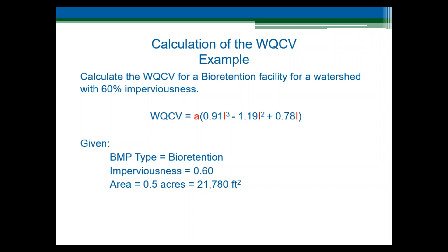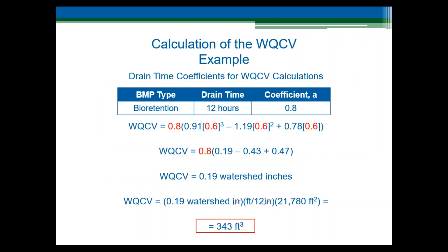Now that we've gone through the method, let's do an example. For this example, let's assume that we are designing a bioretention facility for a watershed that has an imperviousness of 60%. We also will assume a watershed with an area of a half an acre, or 21,780 square feet. The first thing we do is to select an A coefficient based on the type of stormwater control measure and the drain time. For a bioretention facility, the drain time is 12 hours, and the A coefficient is 0.8. Now we can plug in our imperviousness of 0.6 into the equation with the A coefficient. When we calculate that, it gives us a water quality capture volume of 0.19 inches. To convert this to a volume, we multiply by the watershed area and divide by 12 to convert from inches to feet. When we apply this unit conversion, we get a resulting water quality capture volume of 343 cubic feet.